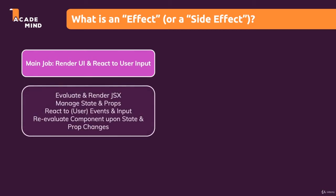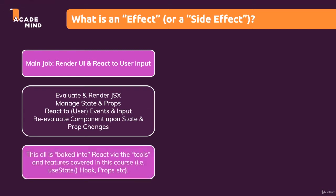So that's the main job of React and of our application. We want to evaluate and render the JSX code and the DOM. We want to manage state and props to make sure that every component has the data it needs and that we reflect the user input correctly. We want to react to user events. And React is there to also re-evaluate our components and their JSX code, and manipulate the real DOM as needed. Something like the useState hook, props, and so on — that's the main job.